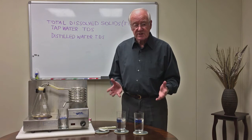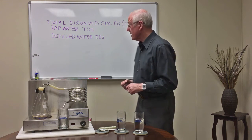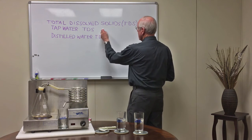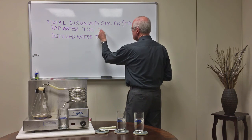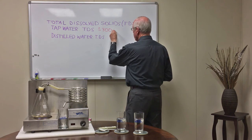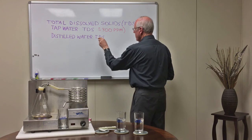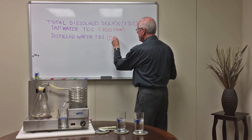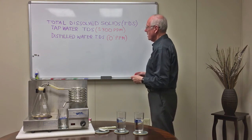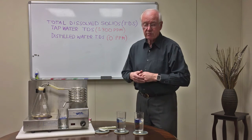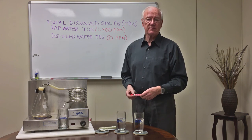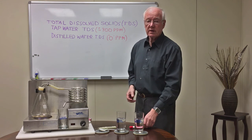And that's really the secret of distilled water. The tap water TDS — I'll just go through this again. Total dissolved solids, also TDS: tap water was approximately 300 parts per million; distilled water was zero parts per million. Quite a difference. In the next video, I'm going to show you how a distiller works, because this is very, very misunderstood. Thank you.